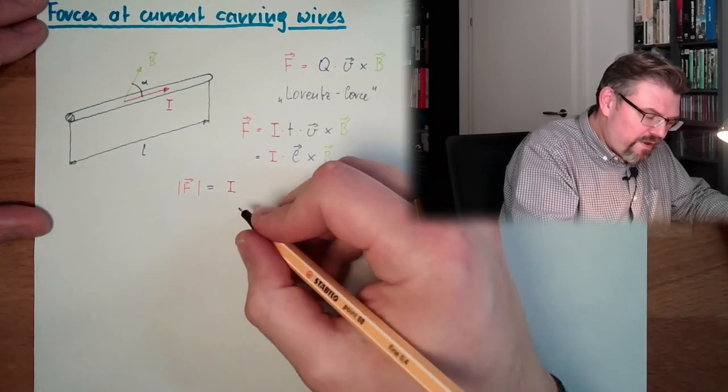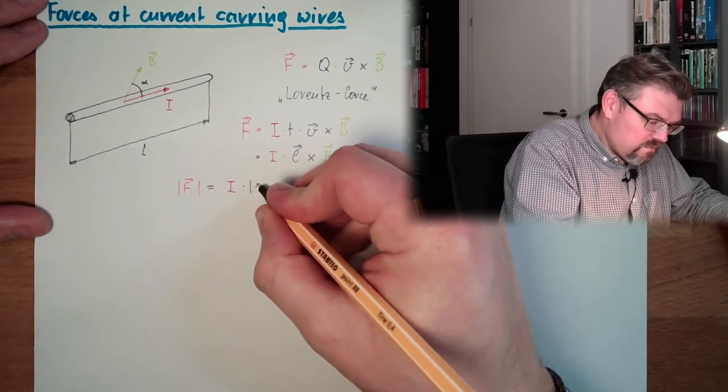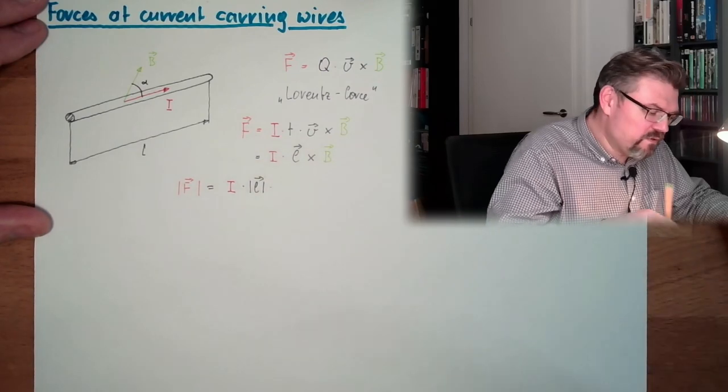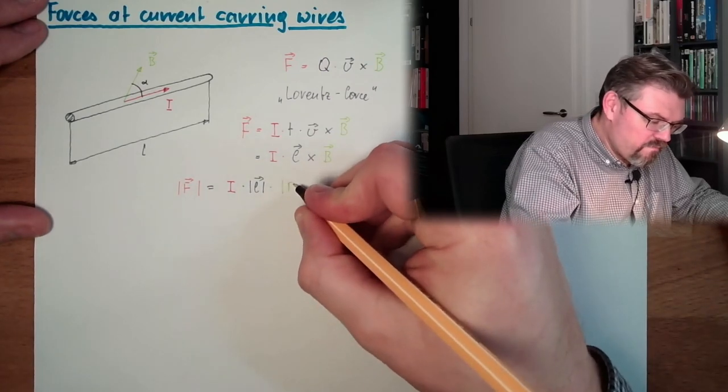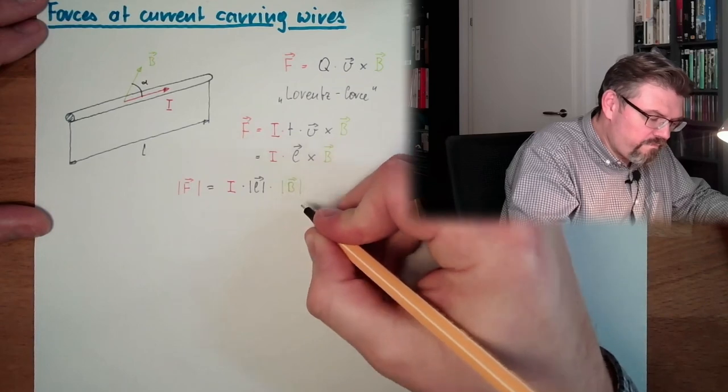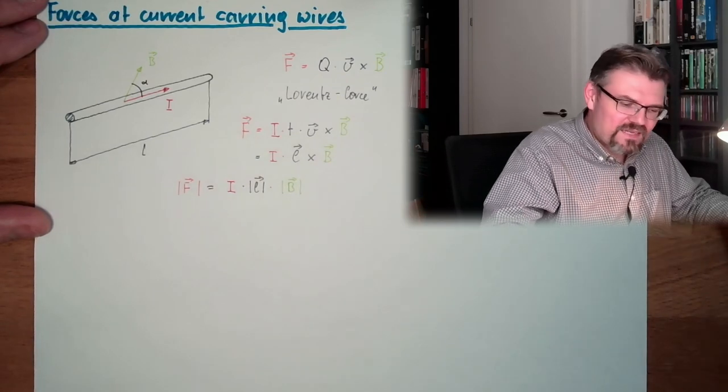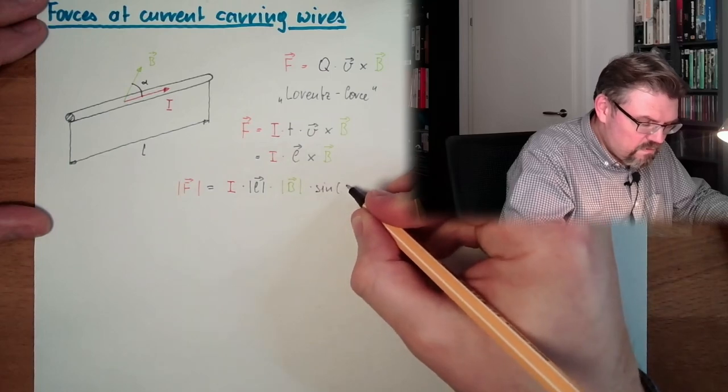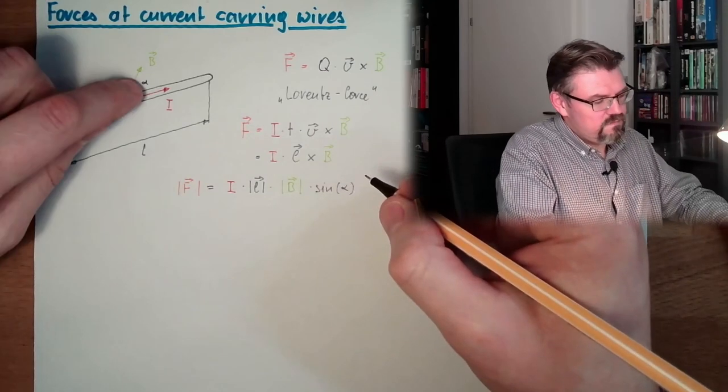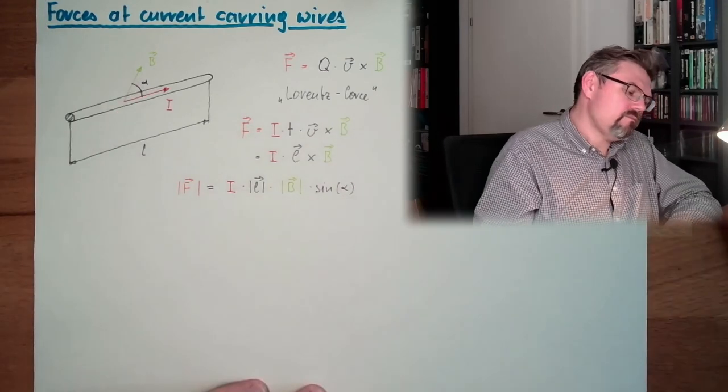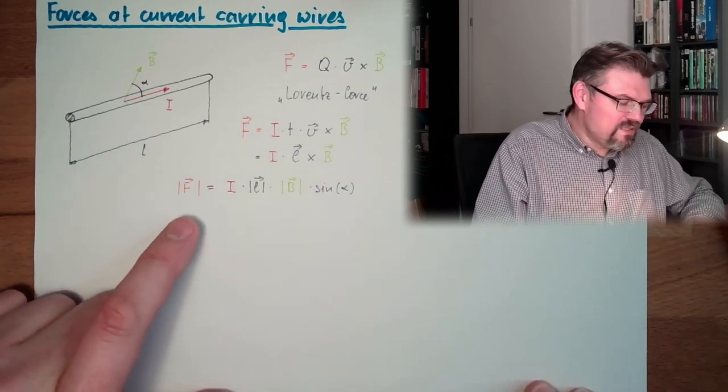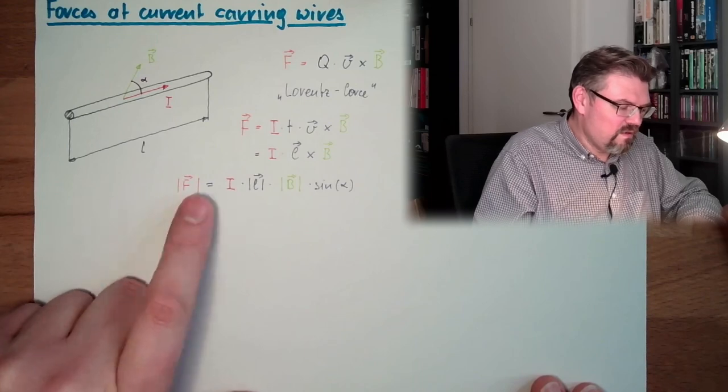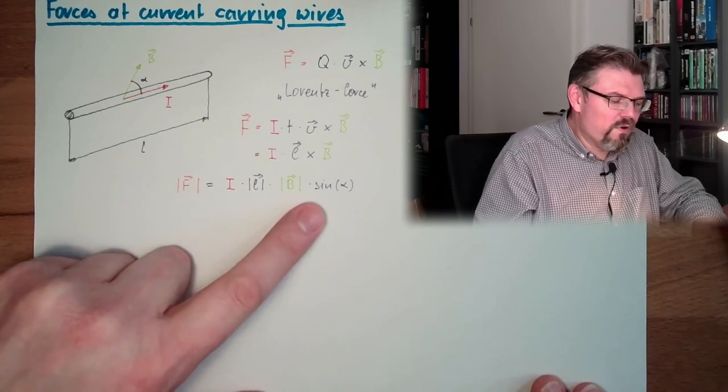The absolute value equals, well, there's no absolute value for I. Then it's the absolute value of L, the absolute value of B. And then we had this sine over this angle here. This was the formula for this cross product.